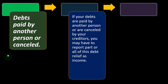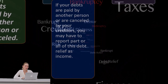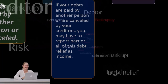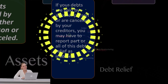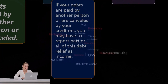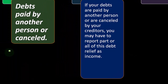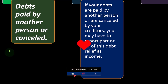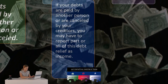Debts paid by another person or canceled. If your debts are paid by another person or are canceled by your creditors, you may have to report part or all of this debt relief as income. Debt relief can be confusing because people often think it doesn't seem like income because you didn't get cash. But if you owed someone money legitimately, and then they decided you no longer owe them — possibly because you can't pay or you're insolvent — that would be the same as if they gave you money and you gave it back to pay off the debt. It's income.